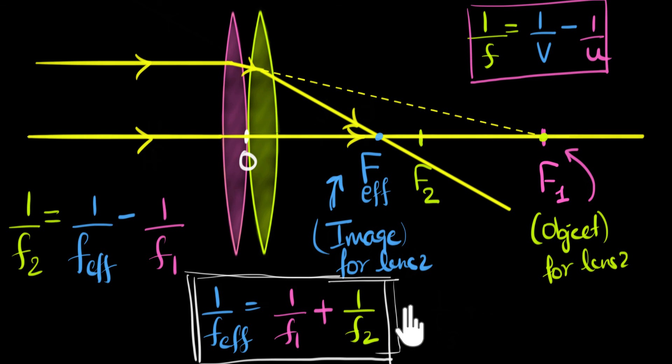Then you will find that the overall effective focal length would be 1 over F1 plus 1 over F2 plus 1 over F3. I highly encourage you to try that exercise yourself, and you will see that we can continue this. If you use four lenses, we can just keep on doing 1 over F4.